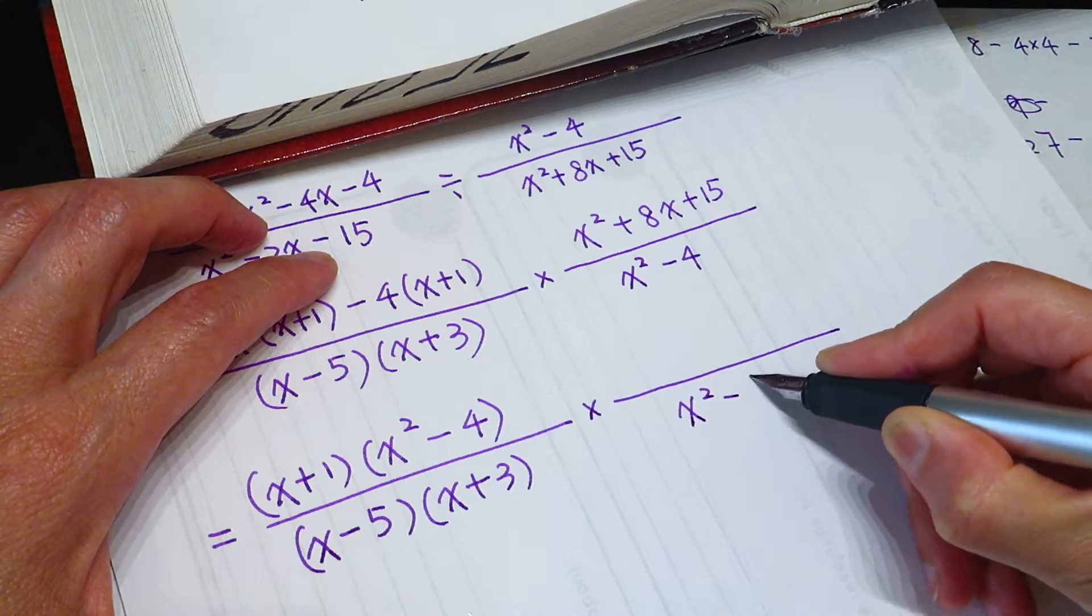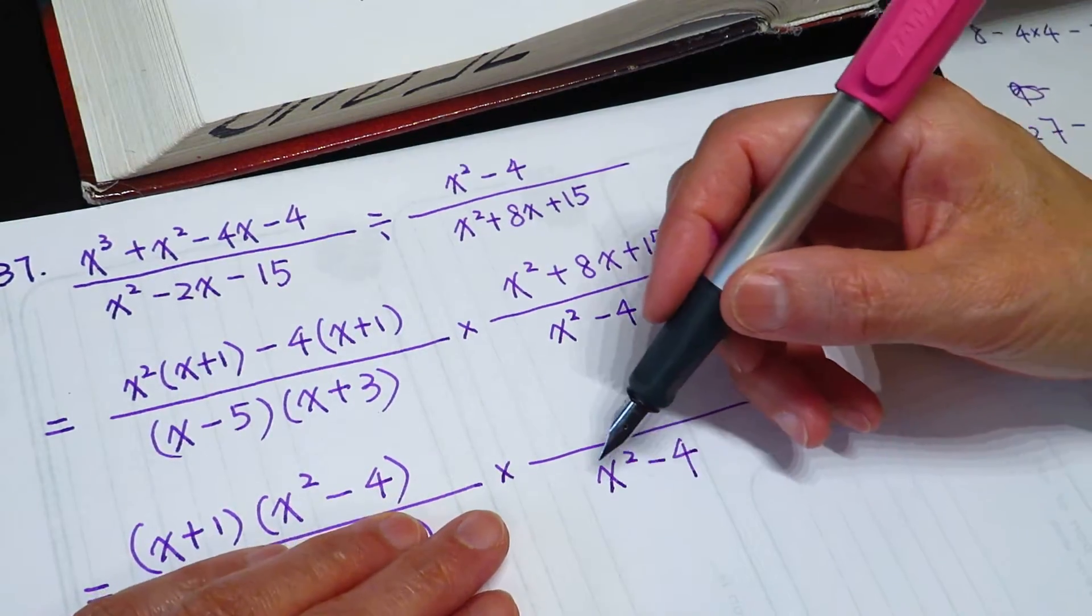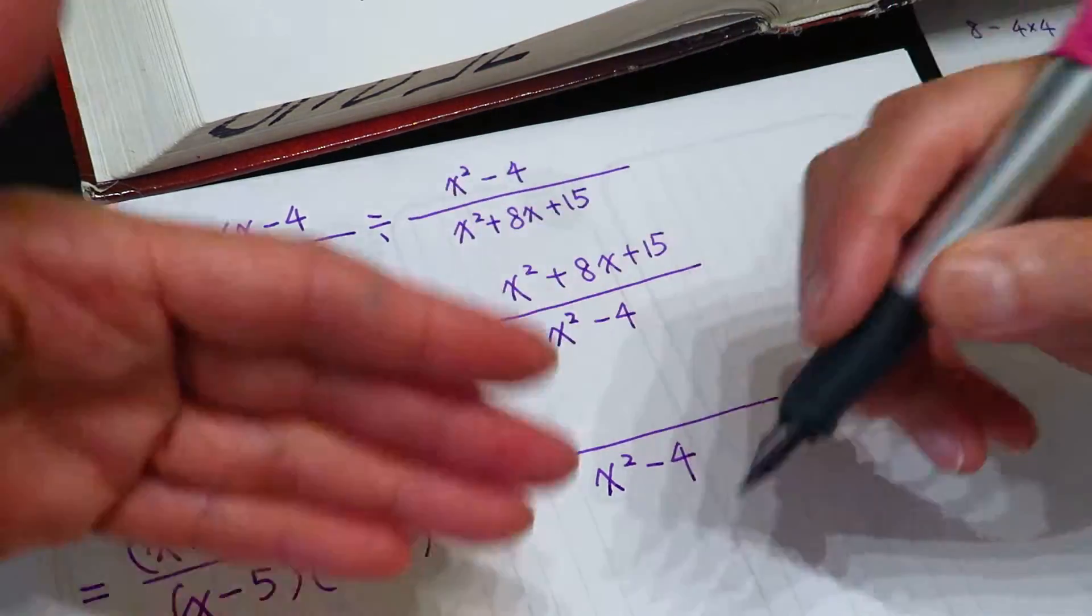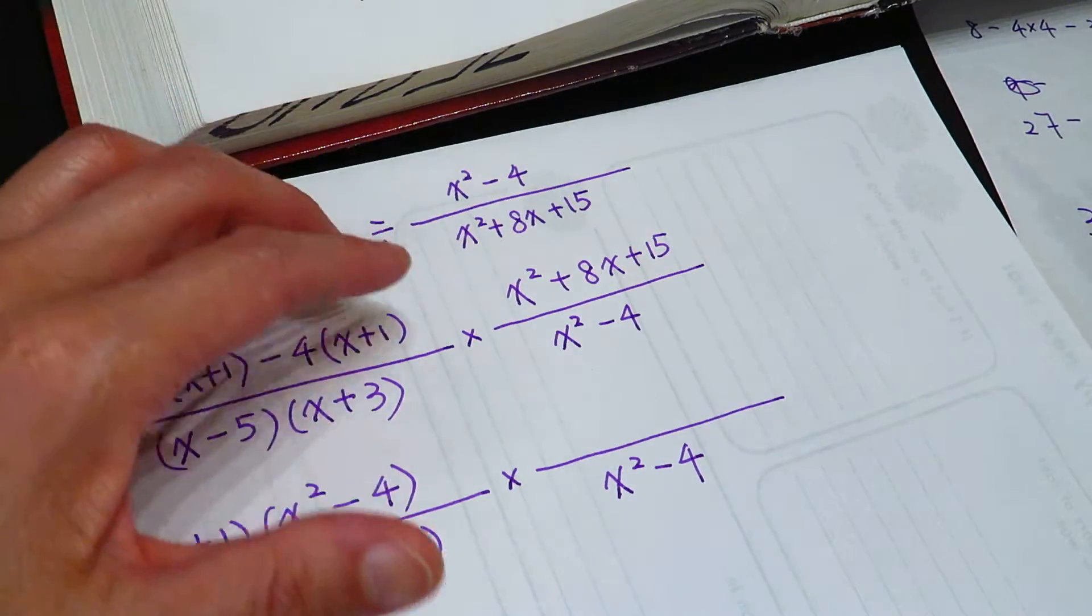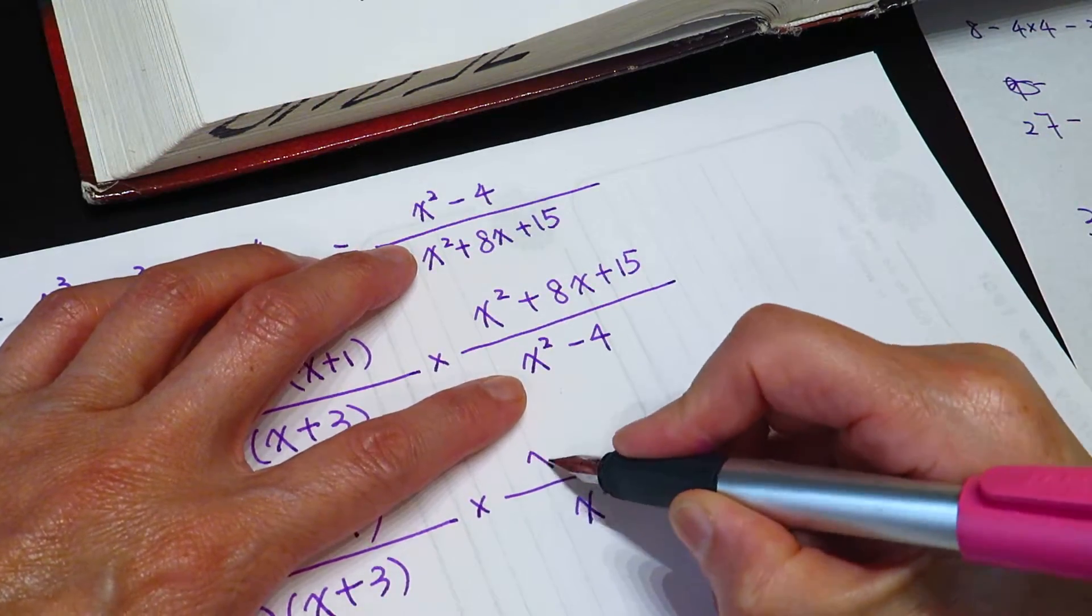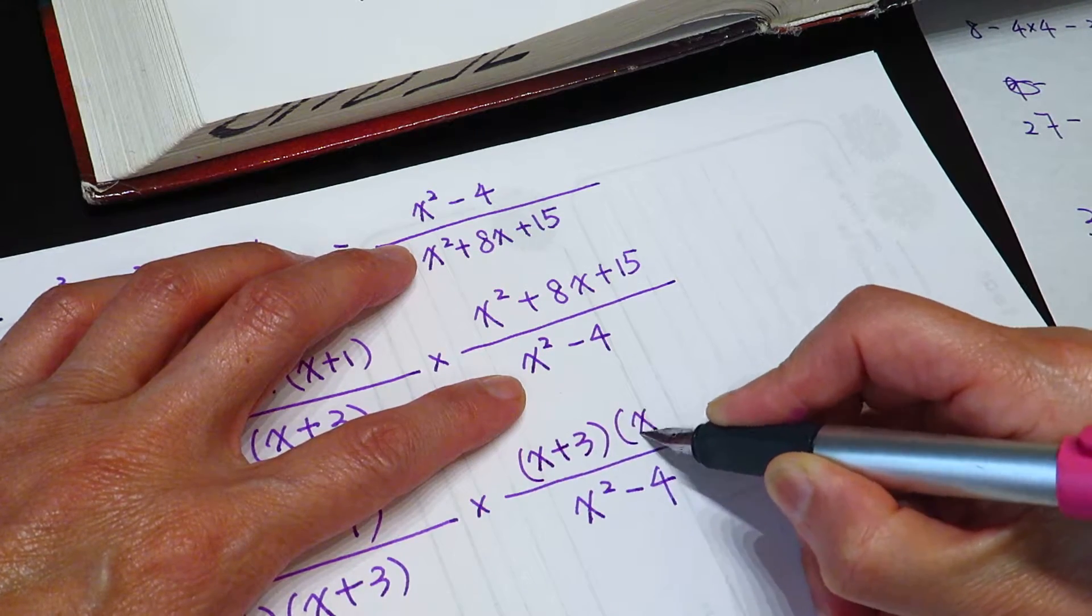square minus 4. And this one we can factor. Why we do not need to factor? Because this is the same. We can just get rid of it right here, right now. Okay, x plus 5, 3 times x plus